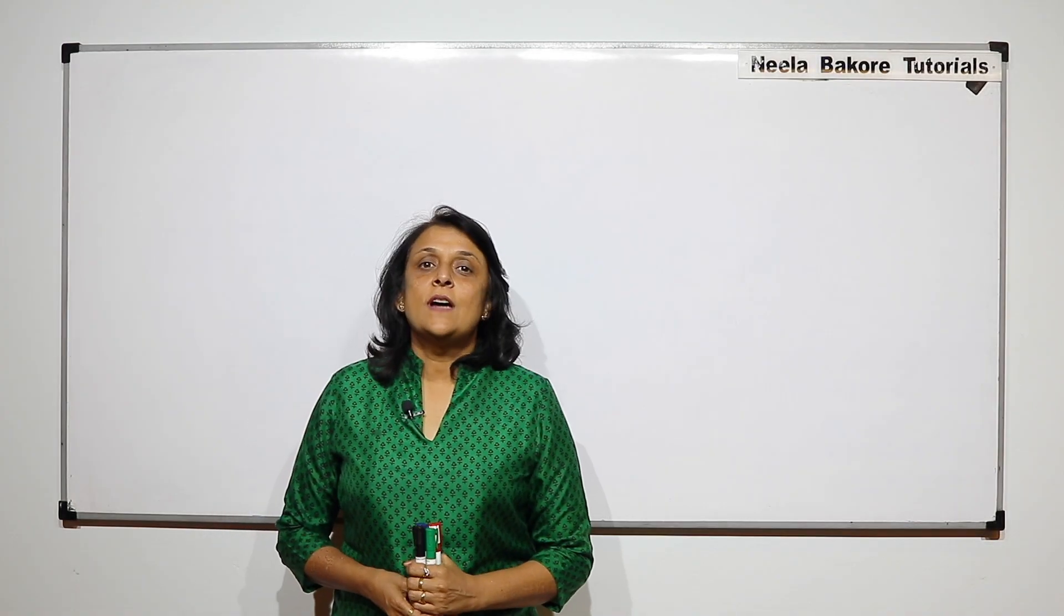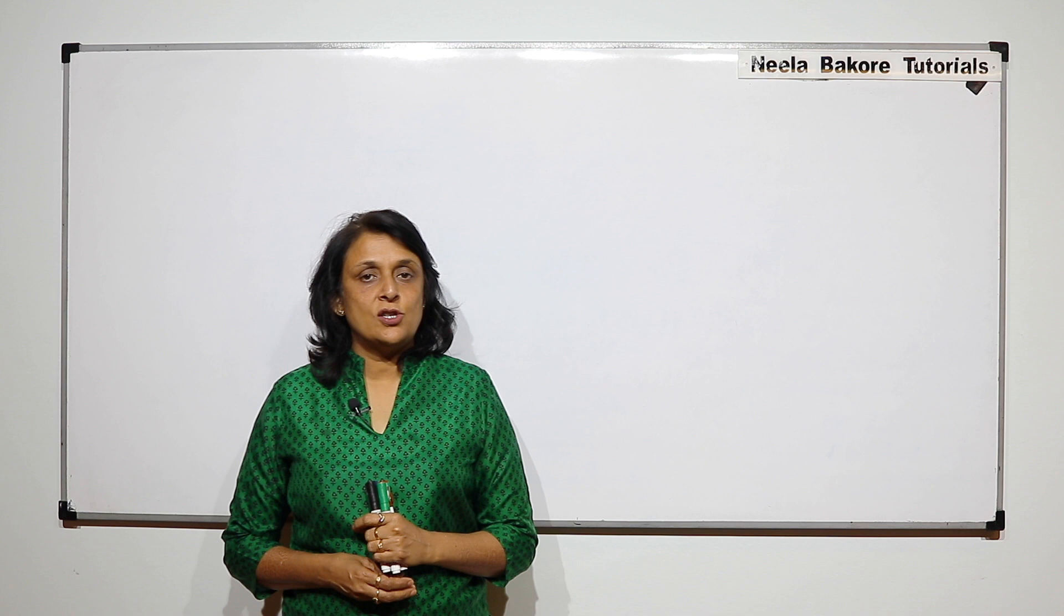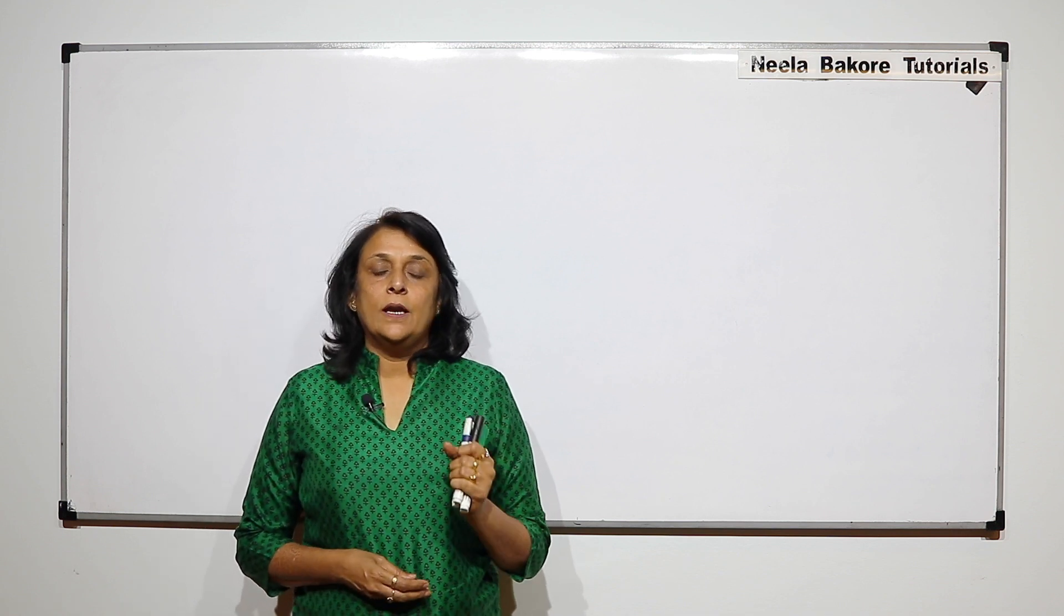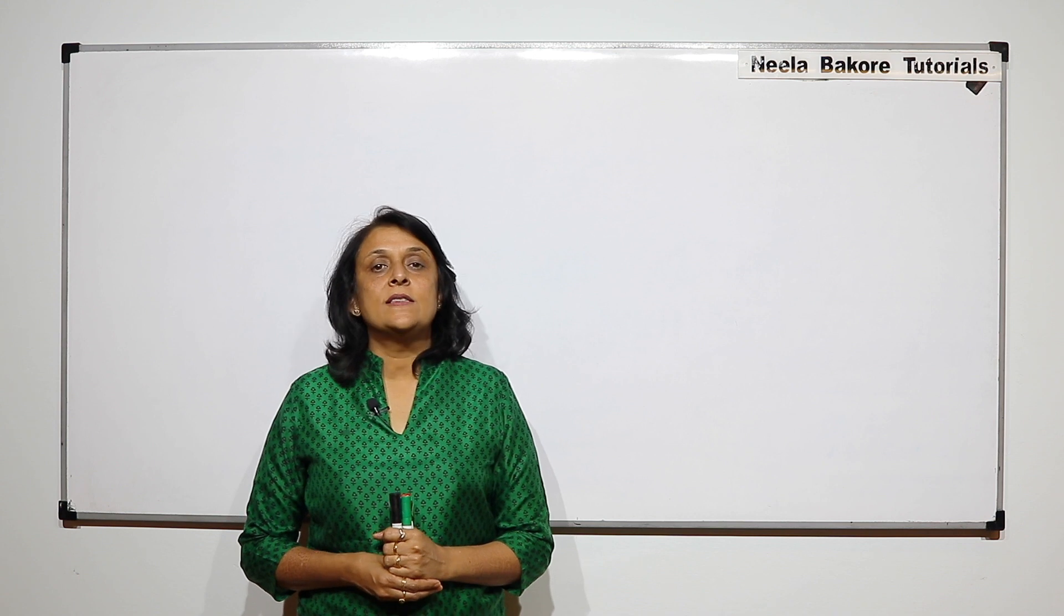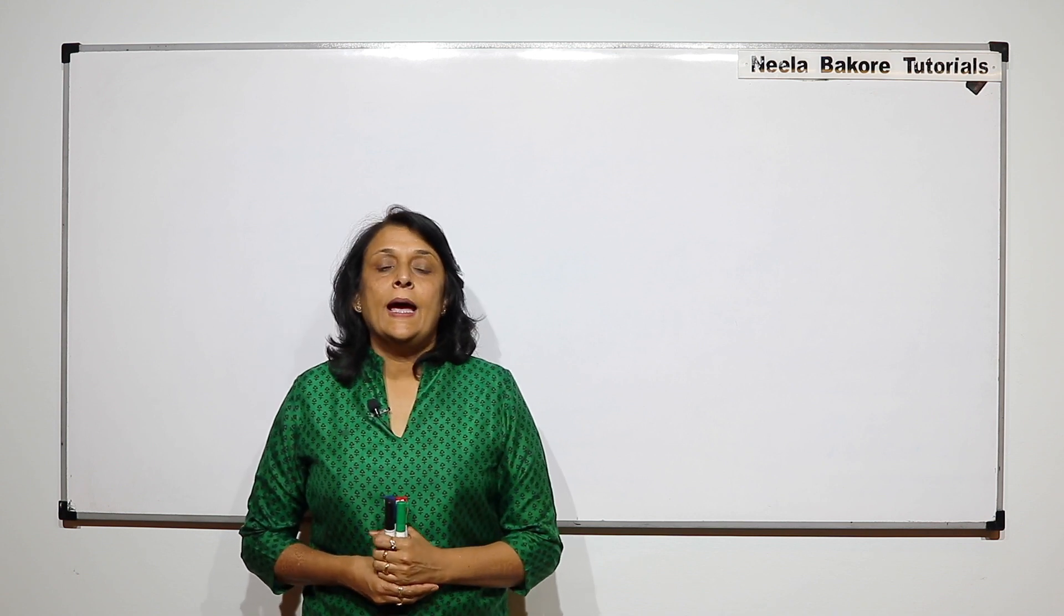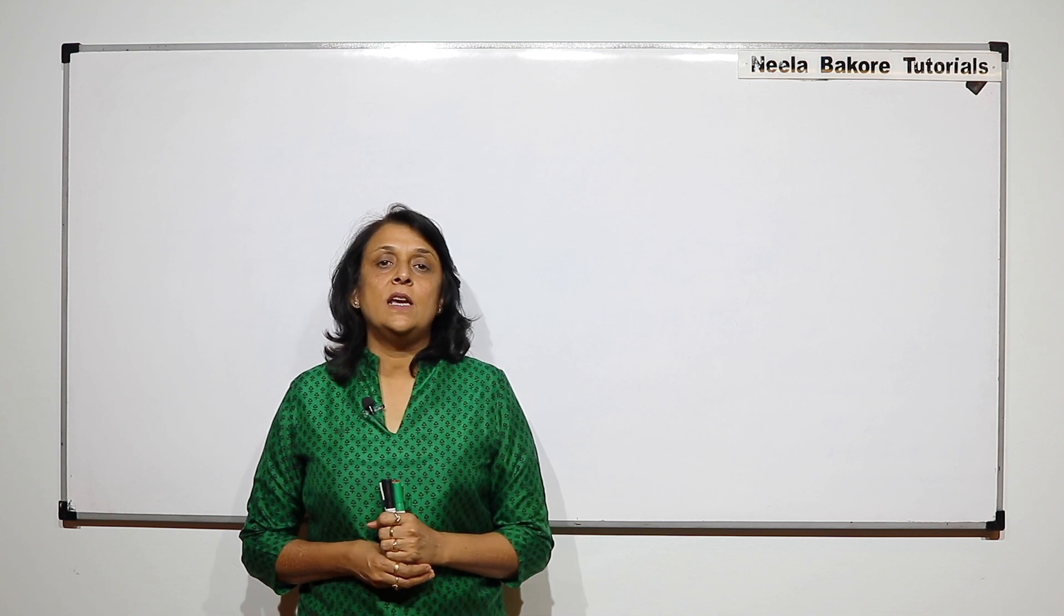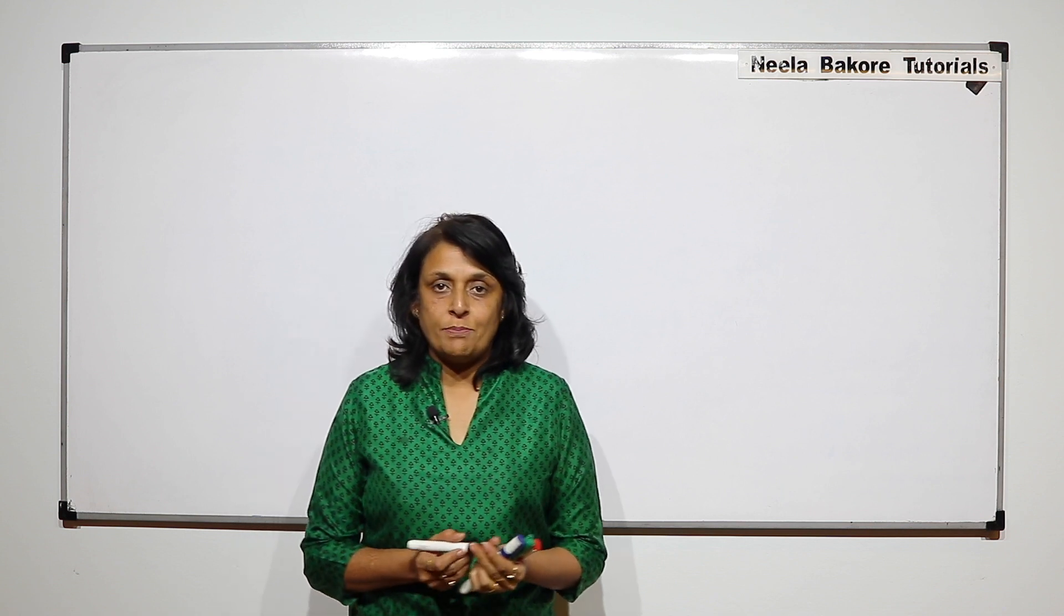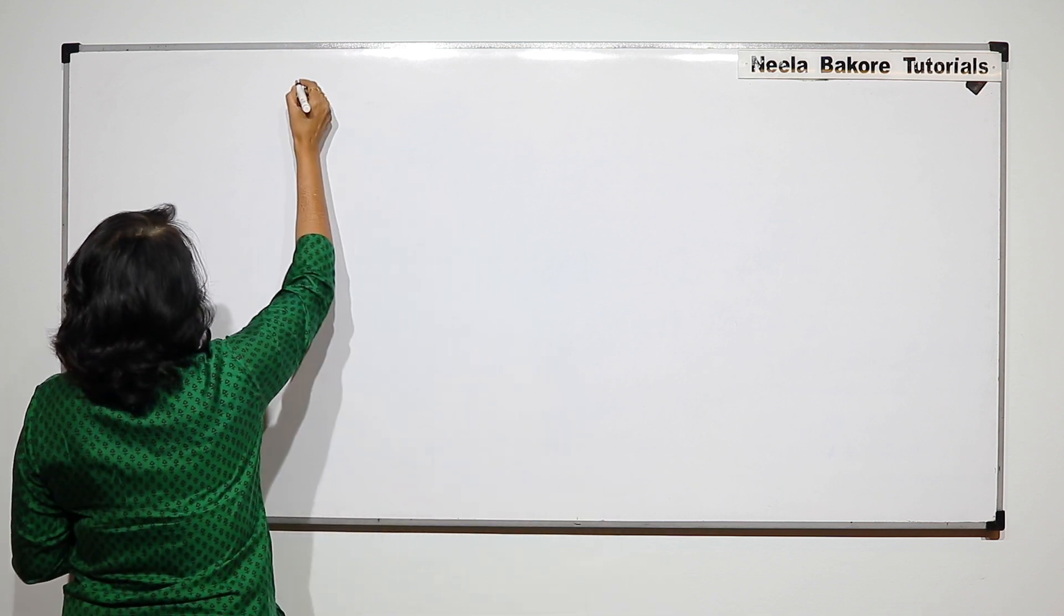We are going to start with the new unit, and this is the last unit. We have completed nine units including 11th and 12th, and this is the 10th unit that we are going to be starting. This is Biology in Human Welfare. There are three chapters and we are starting with the first chapter, that is Human Health and Diseases.